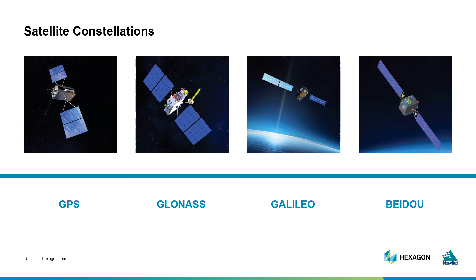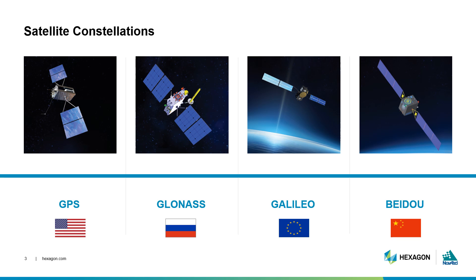GNSS refers to Global Navigation Satellite Systems, which includes four main groups of satellites known as constellations. We have GPS, GLONASS, GALILEO, and BeiDou. Each constellation is managed by a different country and each has their own idiosyncrasies. To transmit information, satellites use radio frequencies allotted to GNSS, and each constellation broadcasts on at least two of these frequencies.